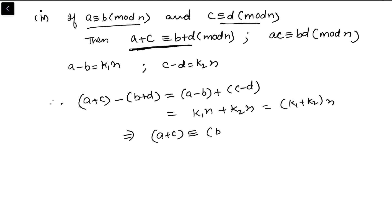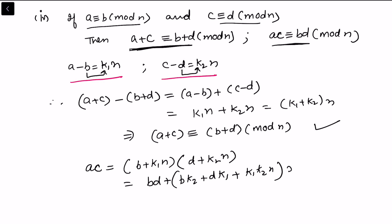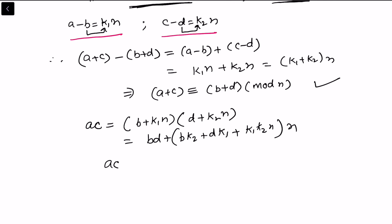Now let's prove that ac is congruent to bd modulo n. From a equals b plus k1·n and c equals d plus k2·n, multiplying these: ac equals (b plus k1·n)(d plus k2·n) equals bd plus b·k2·n plus d·k1·n plus k1·k2·n². So ac minus bd equals (b·k2 plus d·k1 plus k1·k2·n)·n, which means n divides ac minus bd, so ac is congruent to bd modulo n.